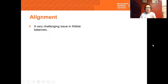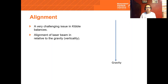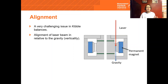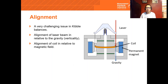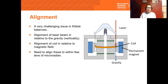One of the most challenging issues that any Kibble Balance can face is the issue of alignments. We are currently experimenting with different techniques to carefully address them — for example, how to ensure the laser for measuring the velocity of the coil is aligned to gravity, which is always pointing in the vertical direction. Any misalignment of the coil relative to the magnetic field will cause the coil to tilt. Any of these misalignments will produce measurement errors and increase the overall uncertainty significantly.